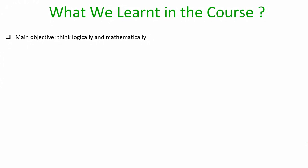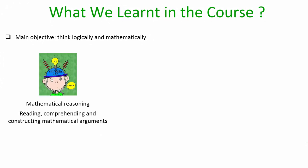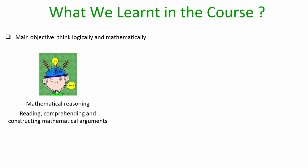The main objective of the course was to think logically and mathematically. We have covered various topics, starting with mathematical reasoning, where we have seen how to write various types of proofs, understand the proofs, and so on. We have done lots of combinatorial analysis.